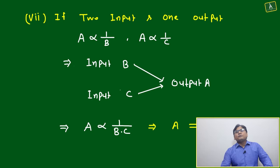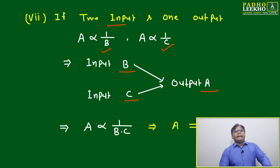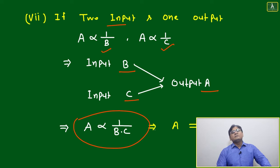This is an extension of inverse proportionality. We have seen only one input and one output. Now we are seeing two inputs and one output. A is inversely proportional to B, and A is inversely proportional to C. Input B, input C, output A. We can write A is inversely proportional to B and C.